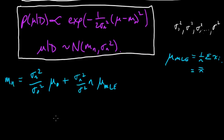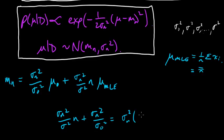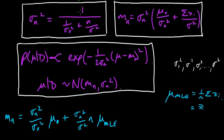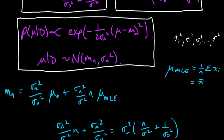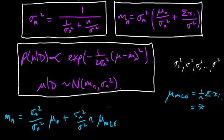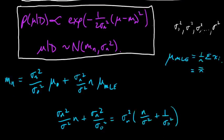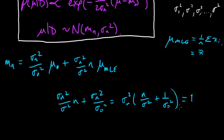If we sum the two coefficients, we pull out sigma_n squared and get n over sigma squared plus 1 over sigma_naught squared. And sigma_n squared is 1 over that thing, so these cancel and we get 1. So in fact this is a convex combination — a convex combination of mu_naught and the MLE.